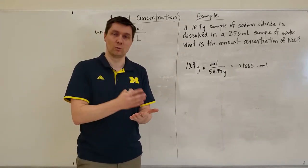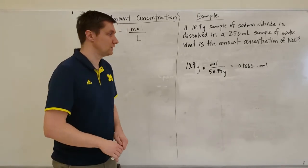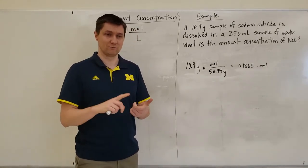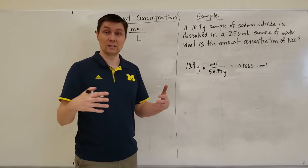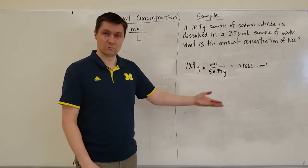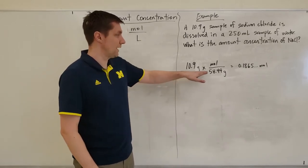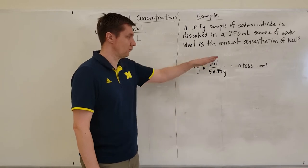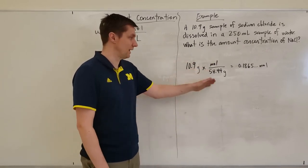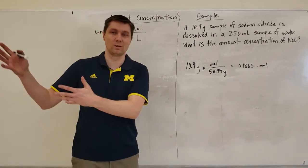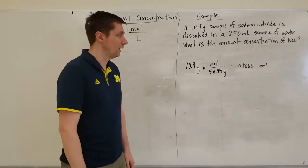Remember for amount concentration we need to have moles and liters. If you remember back from when we did unit analysis of moles and molar mass, we can get moles from that using grams and molar mass. 10.9 grams, setting up my system with moles on the top and grams on the bottom, I divide these two numbers together and I get 0.1865 in your calculator.